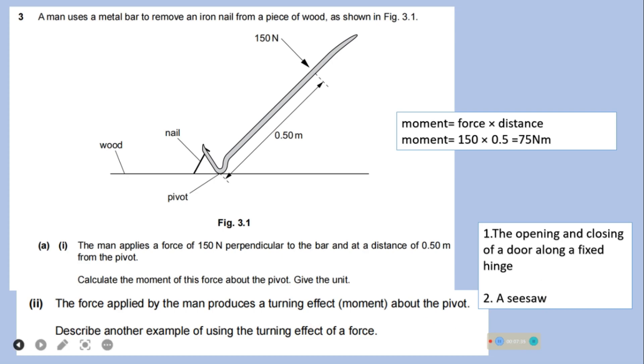The force applied by the man produces a turning effect about the pivot. Yes. Describe another example of using the turning effect of a force. So, the opening and closing of a door along a fixed hinge and a seesaw. These are the other examples of the turning effect of the force.